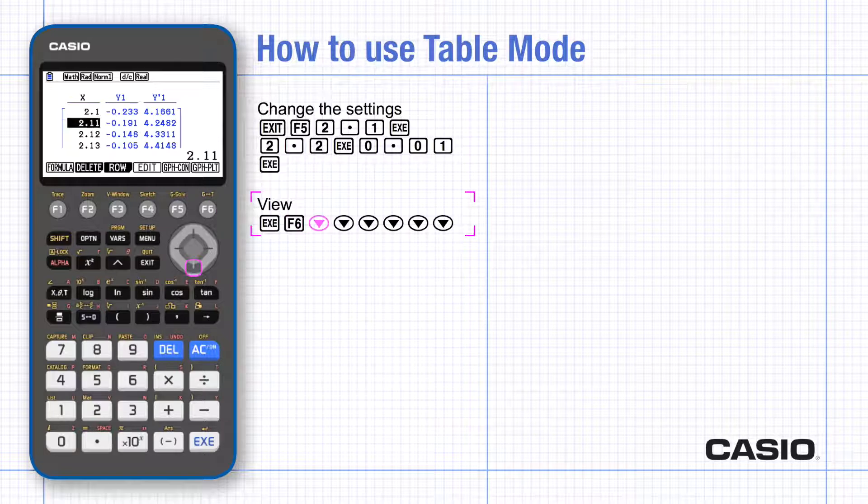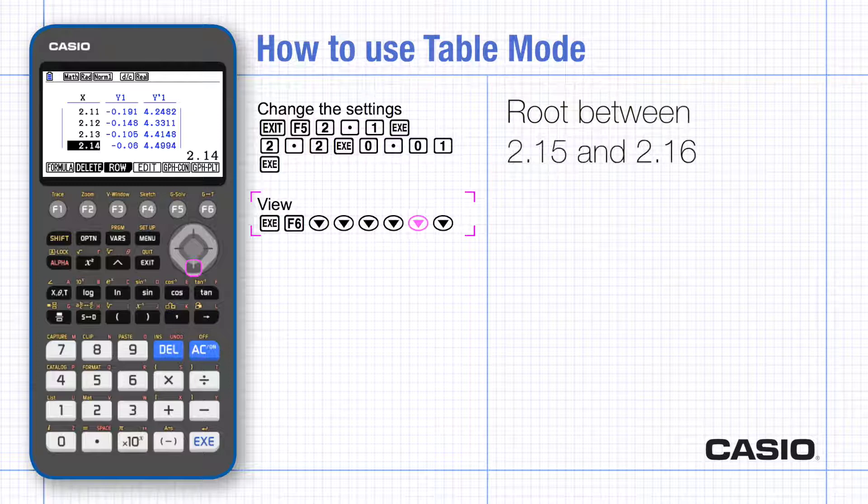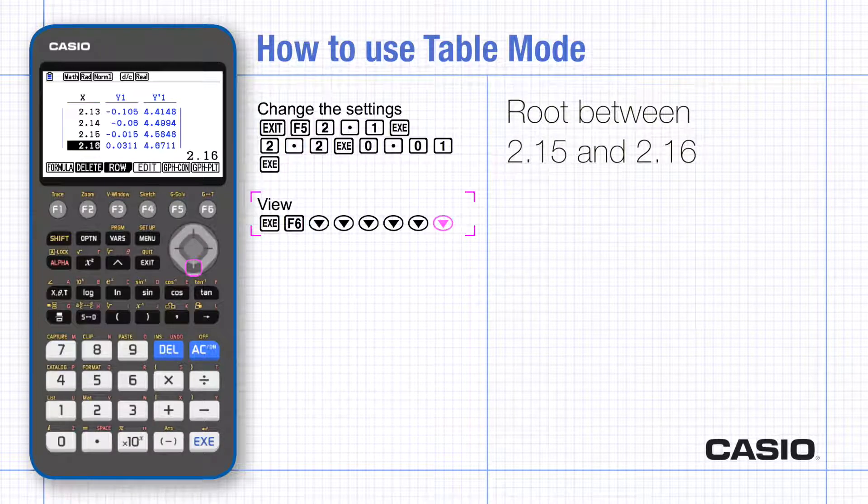And scroll down again to see the change in sign of y. We can now see that the root lies between 2.15 and 2.16.